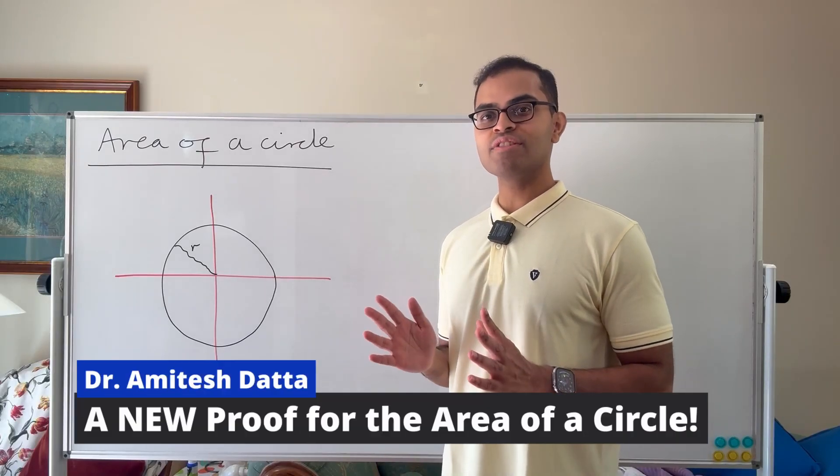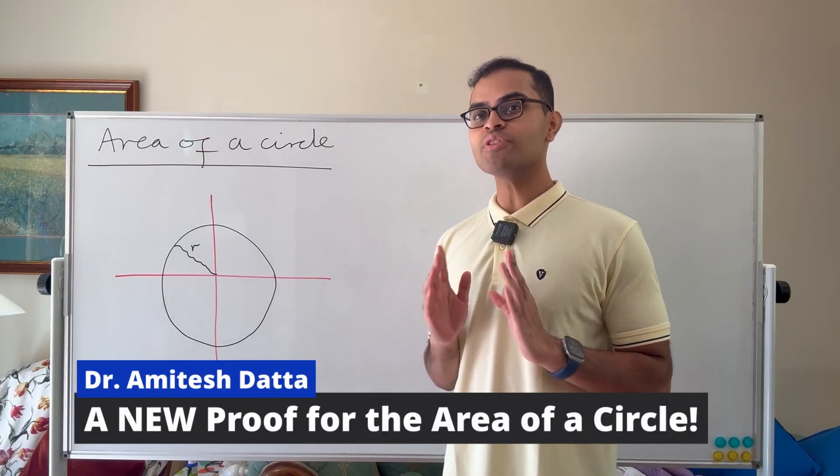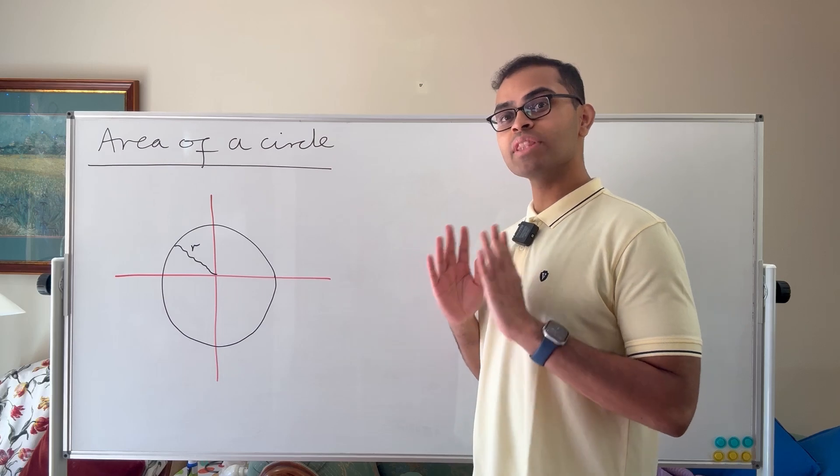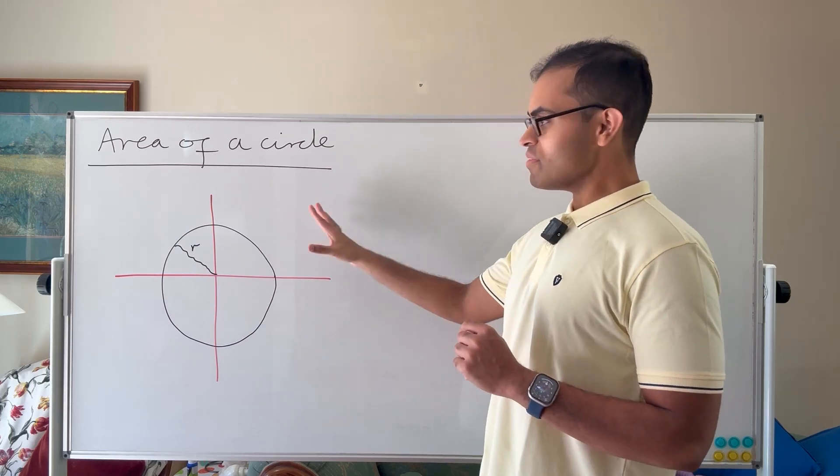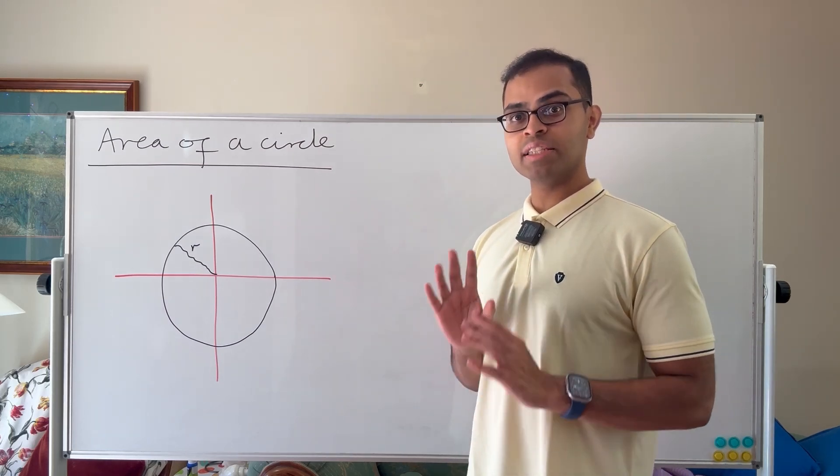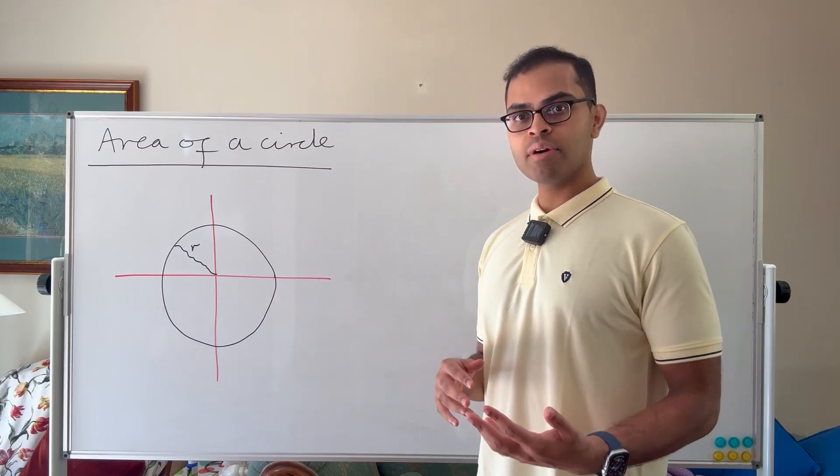I'm going to show you a derivation for the area of a circle that you've not seen before, and it's going to be without integration. So here we have a circle of radius r, we want to show that the area is π r squared. So how are we going to approach this?